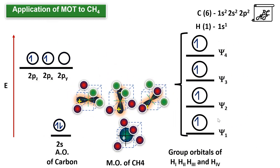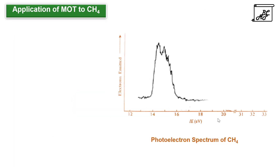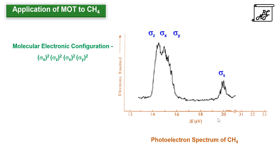According to the molecular orbital diagram, sigma_s has lower energy, whereas sigma_z, sigma_x, and sigma_y have the same energy. There are 8 electrons total — 4 valence electrons of carbon and 4 electrons from the 4 hydrogen atoms — which are filled into all bonding molecular orbitals according to the Aufbau principle and Hund's rule. This is confirmed by the photoelectron spectrum of methane, which shows two peaks: one assigned to sigma_s and the other to sigma_z, sigma_x, and sigma_y, indicating those three have the same energy. The molecular electronic configuration is sigma_s2, sigma_z2, sigma_x2, sigma_y2. As there are no unpaired electrons, methane is a diamagnetic molecule.